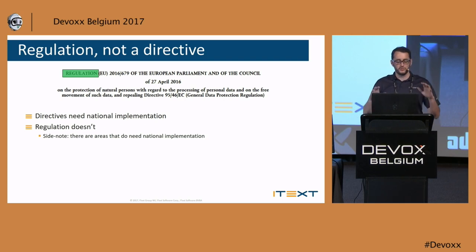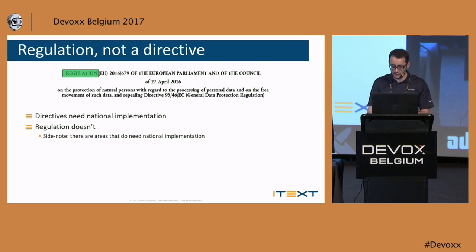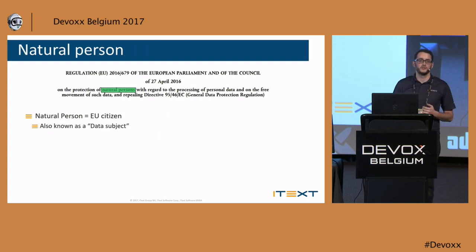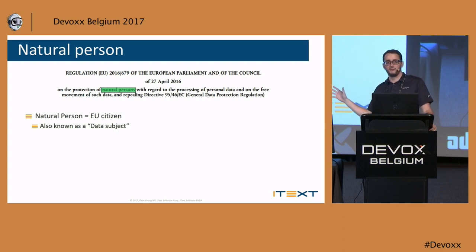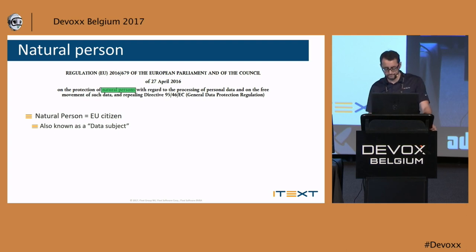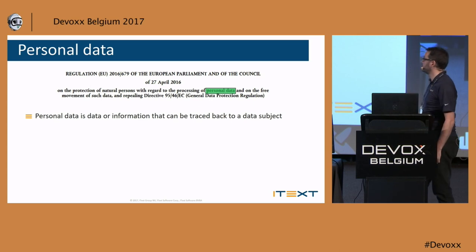In general it's applicable to everyone in the EU effective immediately. Moving on, the next big keyword is 'natural person.' Basically a natural person is the EU citizen — I assume most of you here are EU citizens, so this applies to you. You are protected by the GDPR as a person. The person is also known as a 'data subject' in the GDPR text.